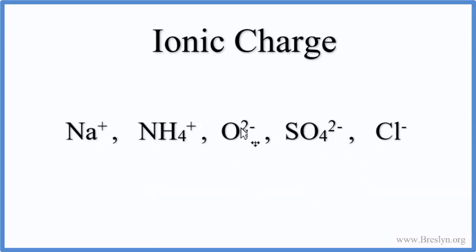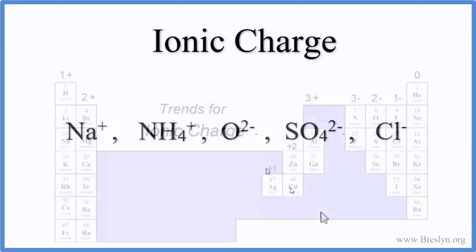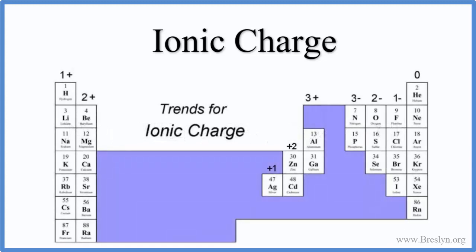But if we have a number like 2, we put the negative sign after the number — that's just the way we do it for ions. This video is about determining the charge on ions, so we're not going to discuss how they form, valence electrons, or how they react. Our goal is to be able to figure out ionic charge.